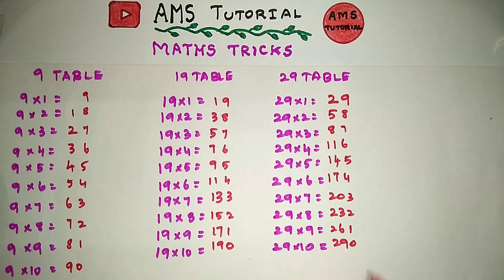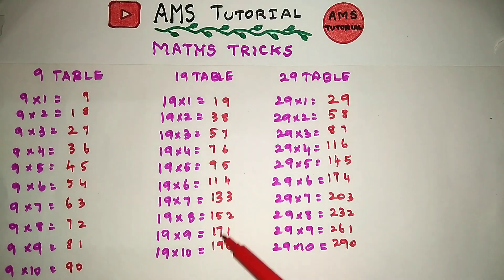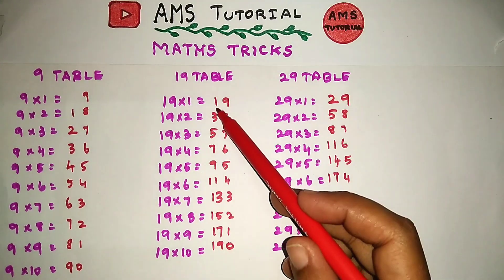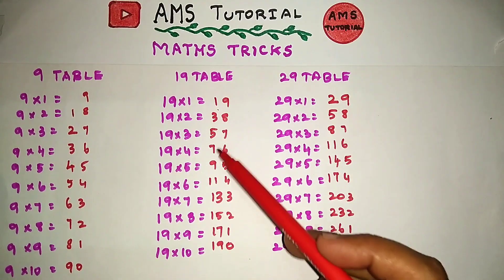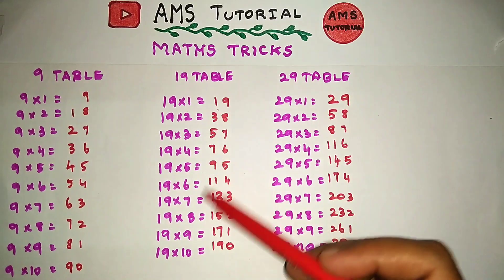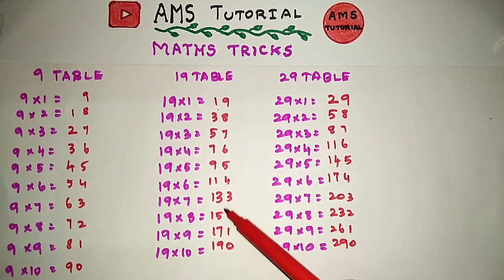That's the 29 table. How easy is it? If you use the 19 table, how easy is it? 1, 3, 5, 7, 9, 11, 13.